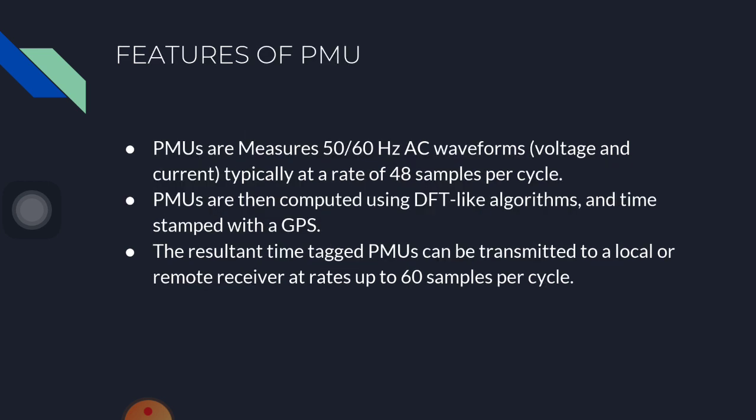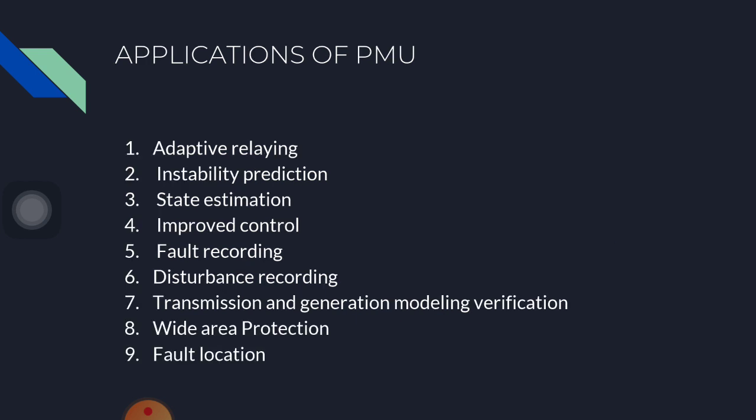Features of PMU: PMUs measure 50 to 60 Hz AC waveforms, typically at a rate of 48 samples per cycle. PMUs compute using DFT-like algorithms and are time-stamped with GPS. The resultant time-tagged PMU data can be transmitted to a local or remote receiver at rates of 60 samples per cycle. Applications of PMU include: adaptive relaying, instability prediction, state estimation, disturbance recording, wide area protection, fault location, transmission and generation modeling, verification, and improved control.